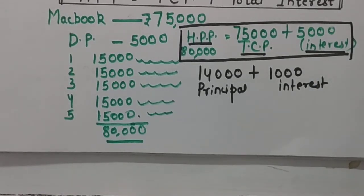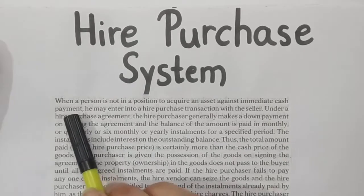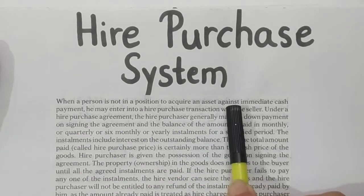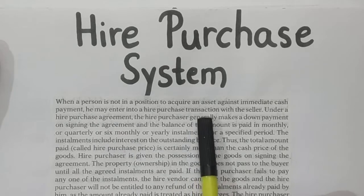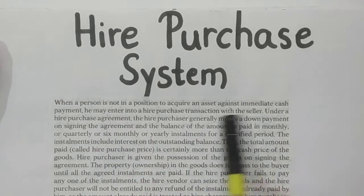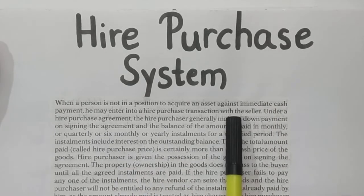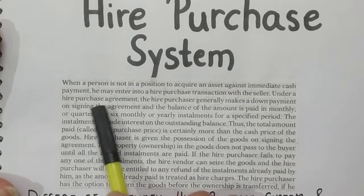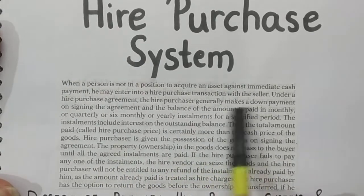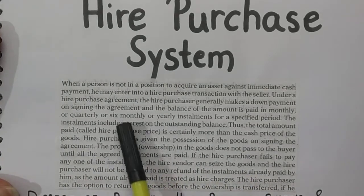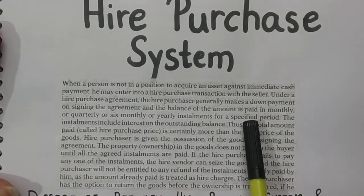Now let's understand hire purchase theoretically. When a person is not in a position to acquire an asset against immediate cash payment, he may enter into a hire purchase transaction with the seller. Under a hire purchase agreement, the hire purchaser generally makes a down payment on signing the agreement, and the balance amount is paid in monthly, quarterly, six-monthly, or yearly installments for a specified period.